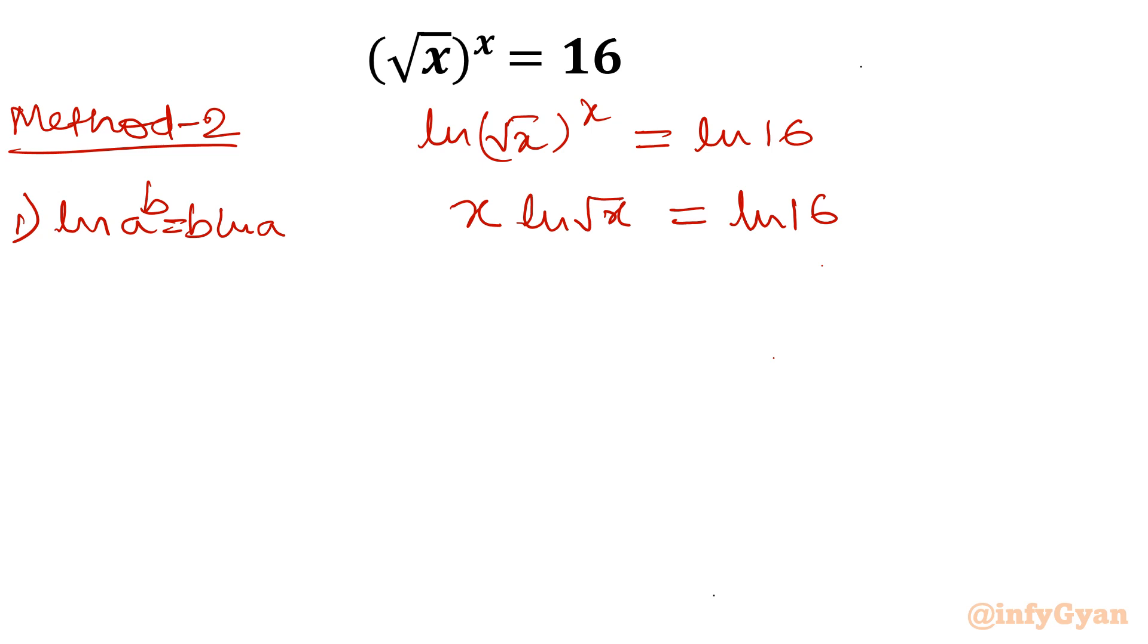Now again we can write ln root x. ln root x can be written as ln x power half. Again this half will come down as a coefficient, so it will become half ln x. So this will become x over 2, x times half, so x over 2 ln x equal to ln 16.